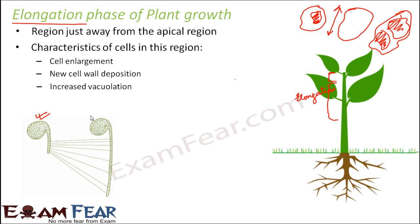If you look at the elongation phase, consider the tip of the stem: this is the elongation zone. Earlier the region was short, and later it elongates — the same cells that were present have gotten elongated, not new cells formed. How did that happen? By cell enlargement or by increased vacuolation. The zone of elongation is just after the meristematic zone because in the meristematic zone new cells are formed, while in the elongation zone the same cells elongate to cause an increase in length.